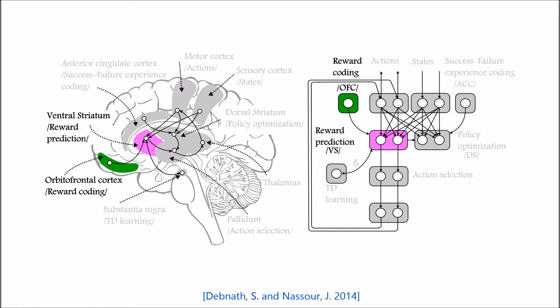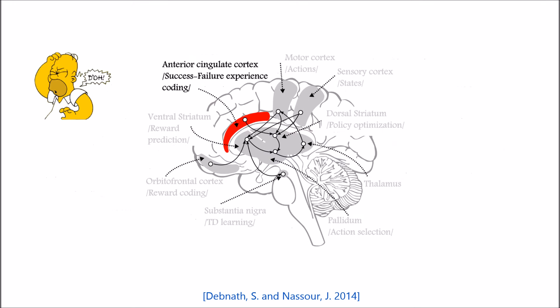The OFC is involved in coding reward information. It becomes responsive to the outcomes of the actions performed and then generates reward information which flows down to the ventral striatum. Studies showed that there exists a ventral to dorsal gradient within the connections of the striatum, which suggests an information flow from the ventral striatum to the dorsal striatum.